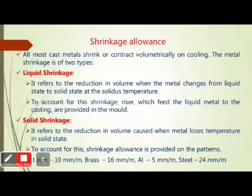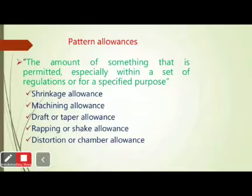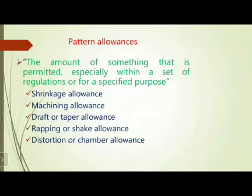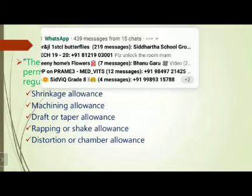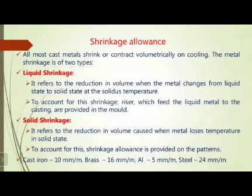These are the five types of allowances: the first is shrinkage allowance, the second is machining allowance, the third is taper allowance, the fourth is shake allowance, and the fifth is camber allowance — totally five allowances. Now, according to the shrinkage allowance, this may be subdivided.